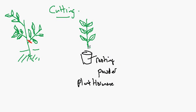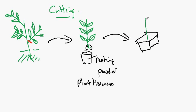These will cause the cells at the end of the cutting to develop into roots. And so then all we need to do is to place the cutting into a container, perhaps a container of soil.